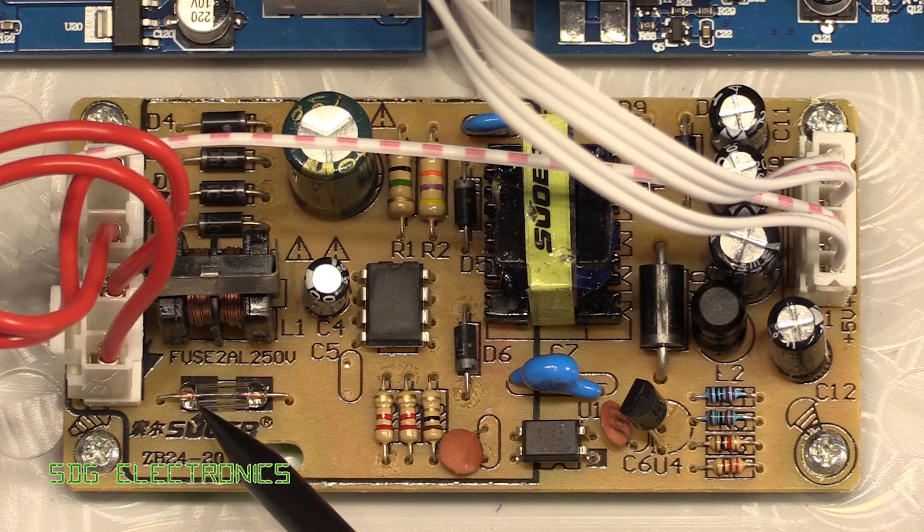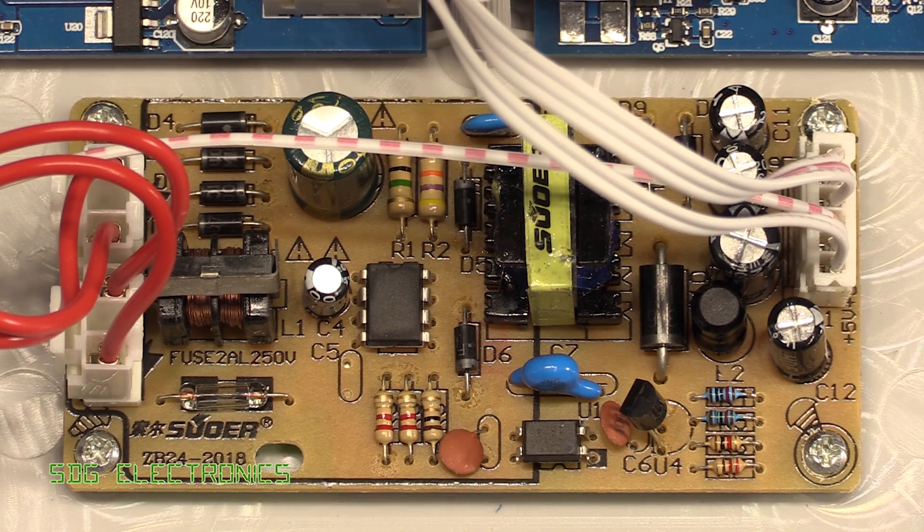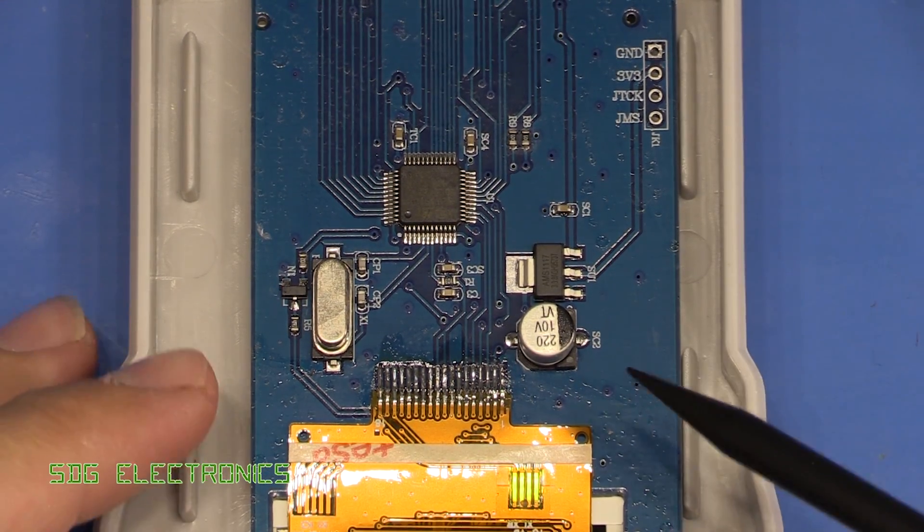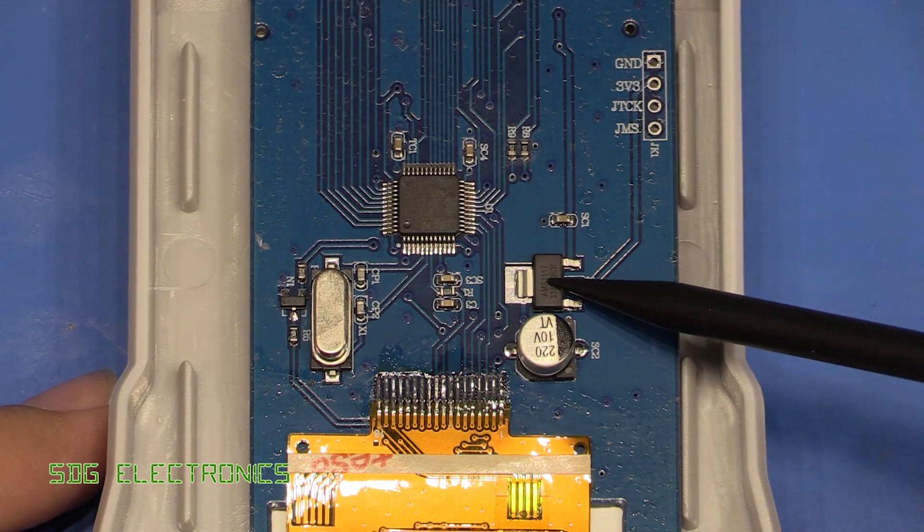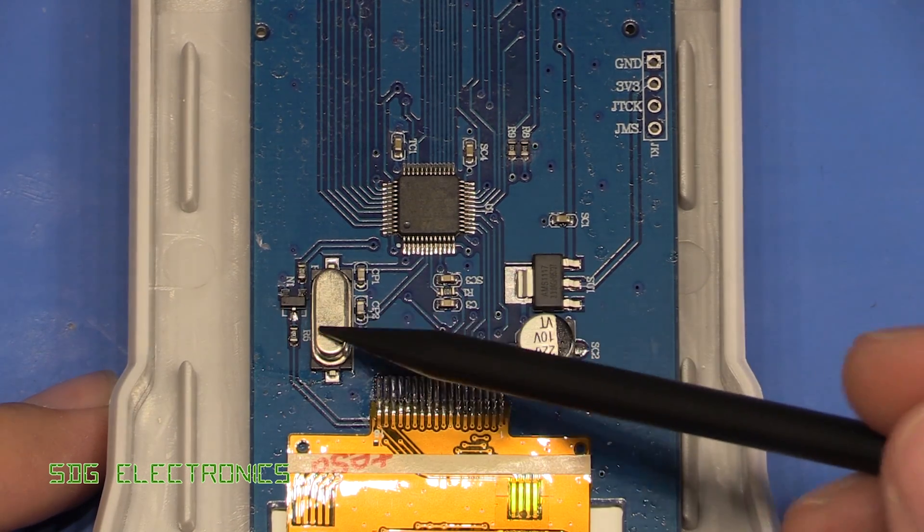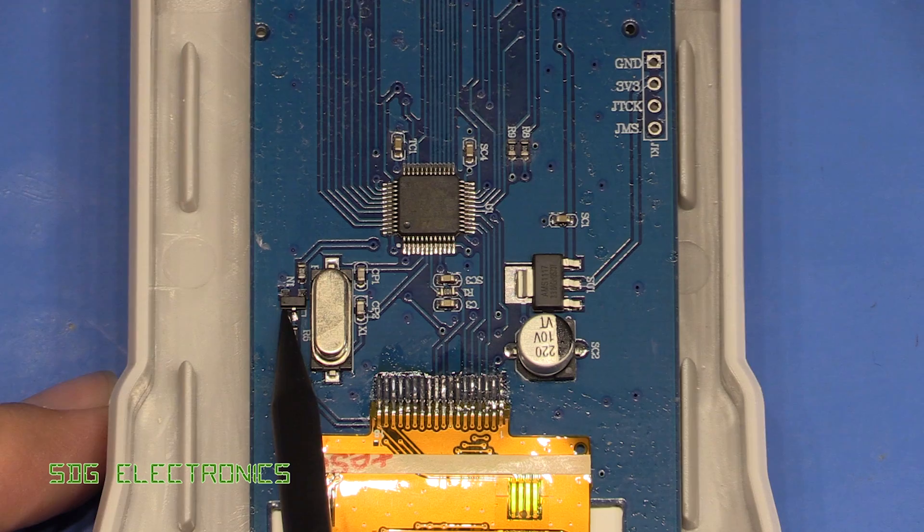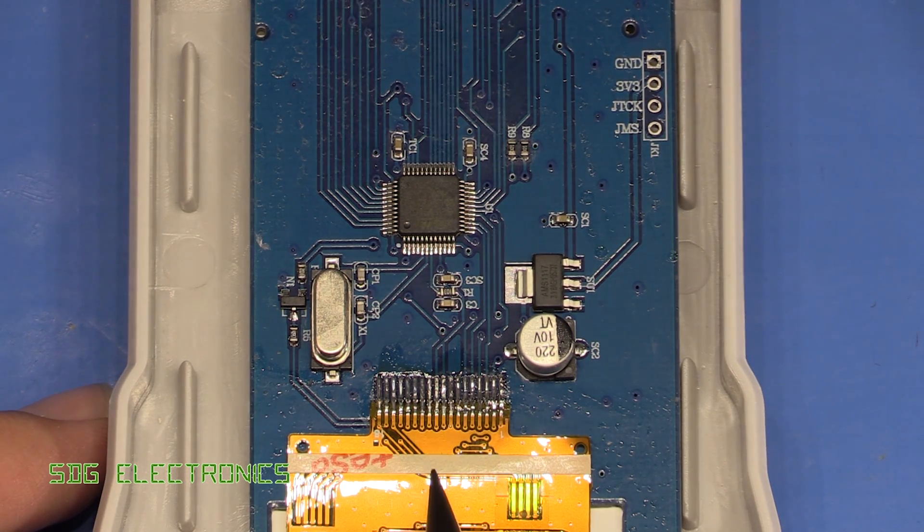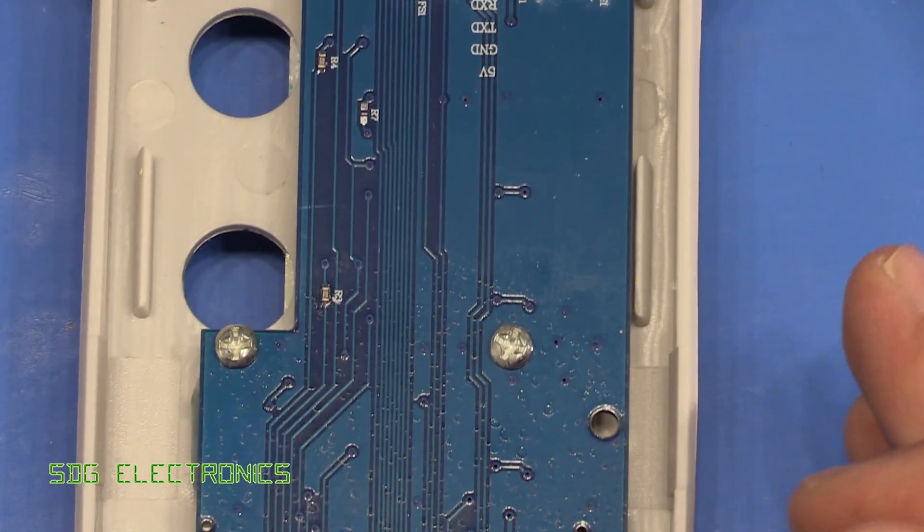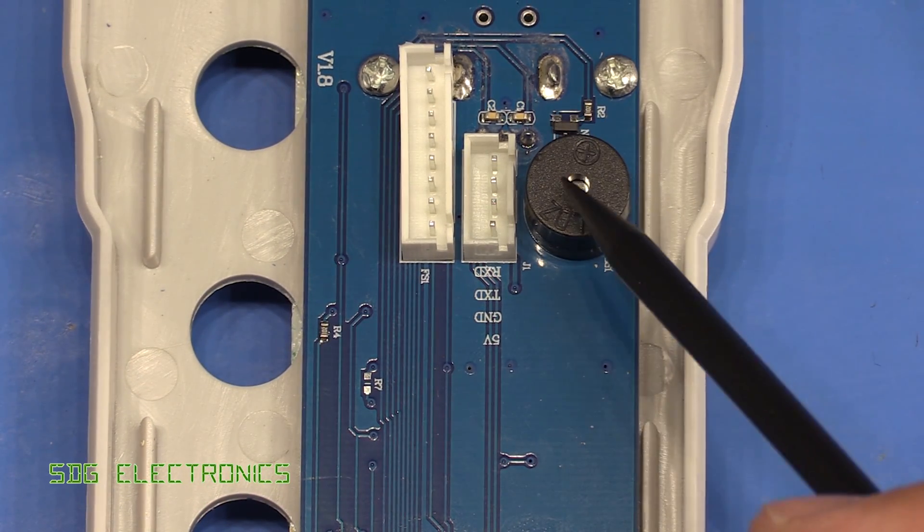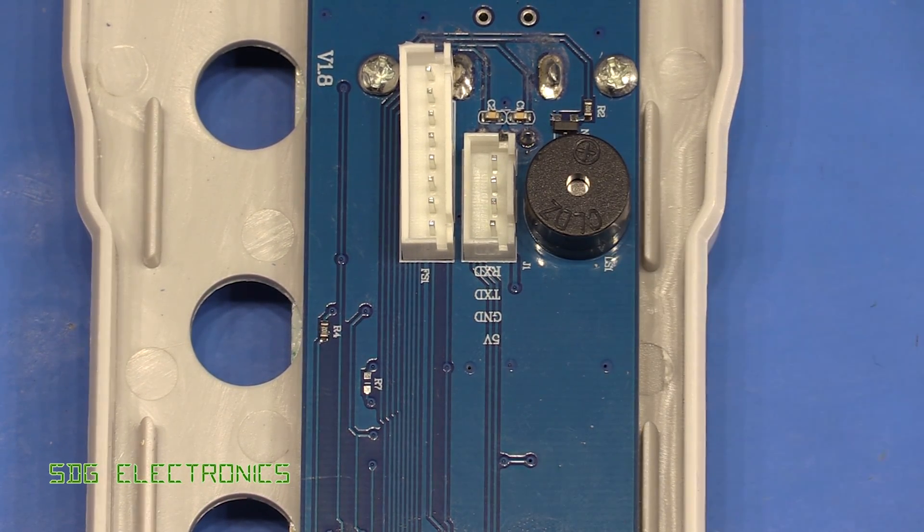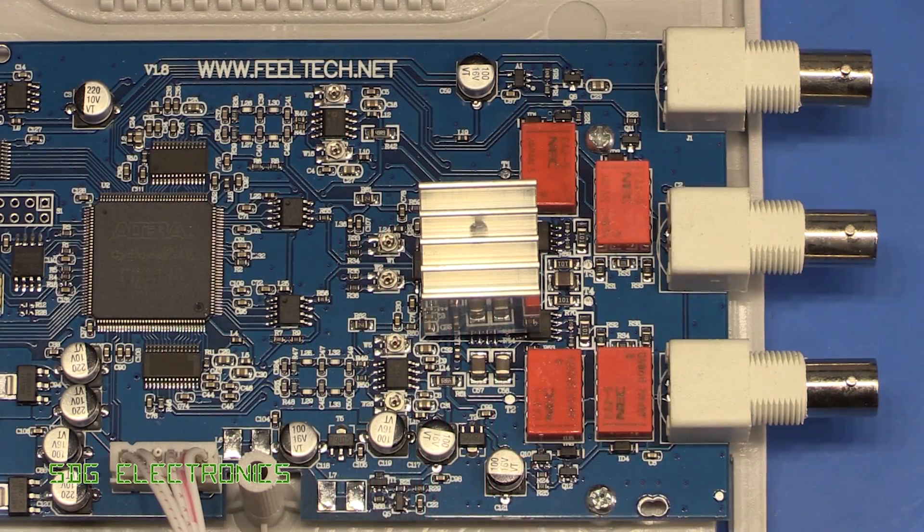There's not really very much going on on the display board. We've got an STM32 microcontroller, a 3.3 volt regulator, capacitor, crystal, and then a little MOSFET here for driving the backlight on the LCD. There's a couple of LEDs on the other side, mainly just buttons, and a little transistor here for driving the piezo.